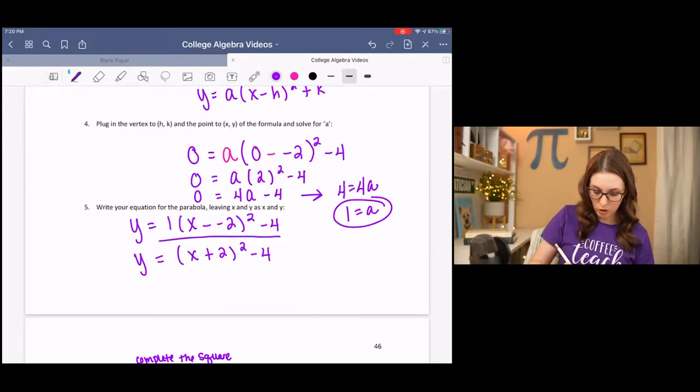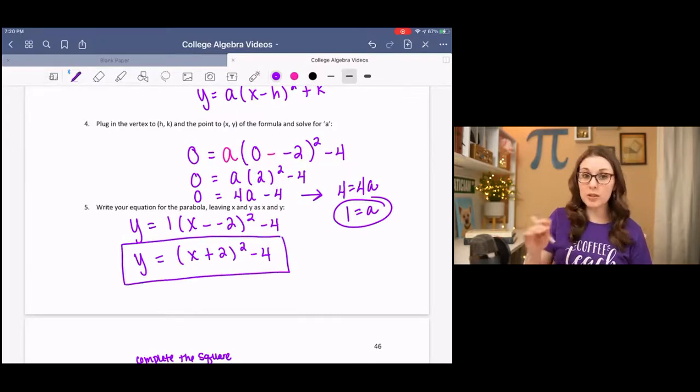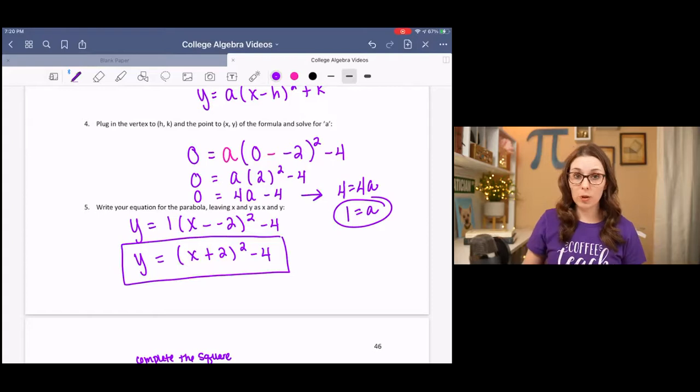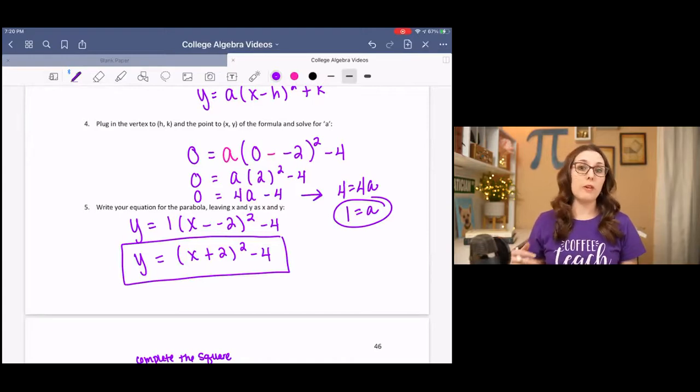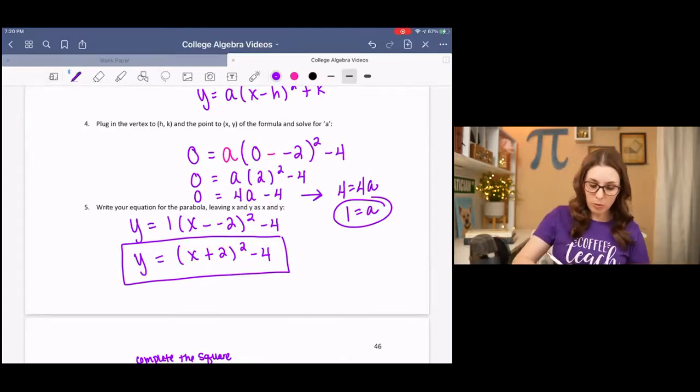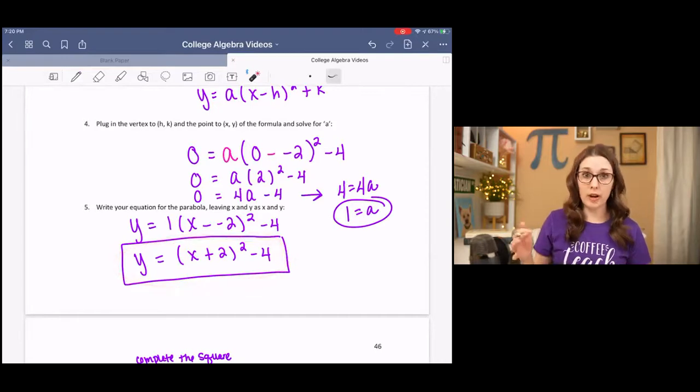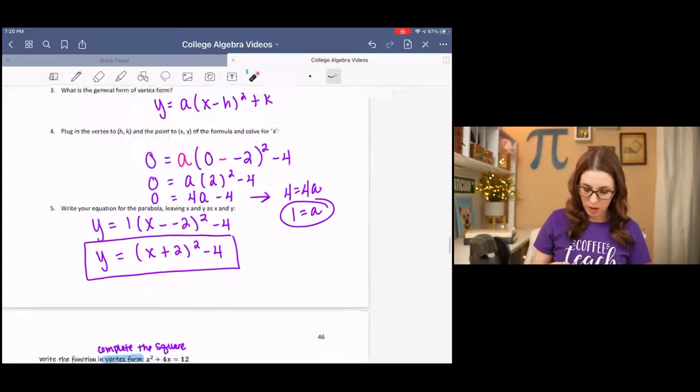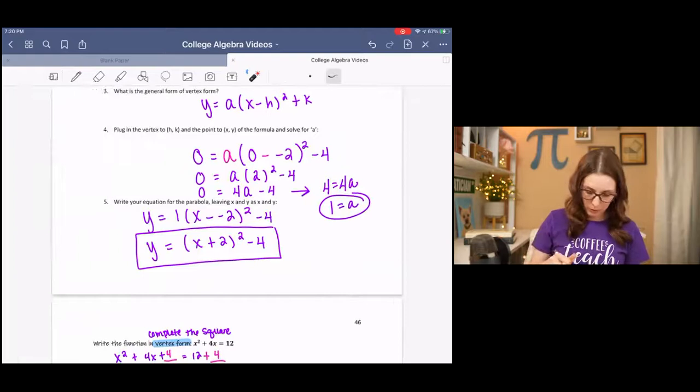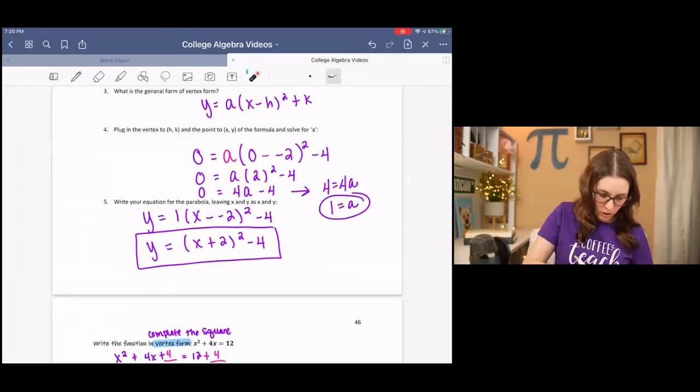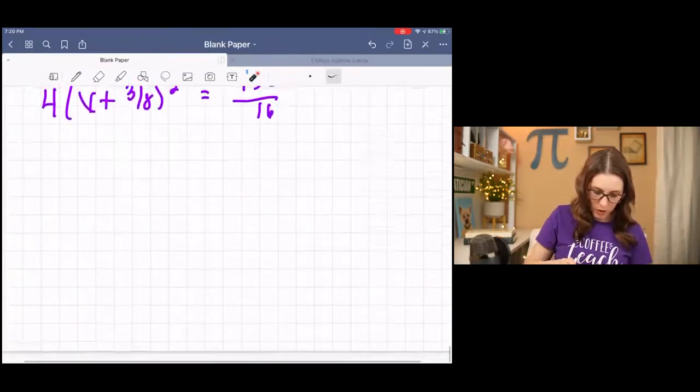Then I simplify. There's no need really for that 1 in front. And there's your equation. Now I will say, this is vertex form, so you can write this in standard form. If the problem is asking for standard form, you can easily go from here to there.